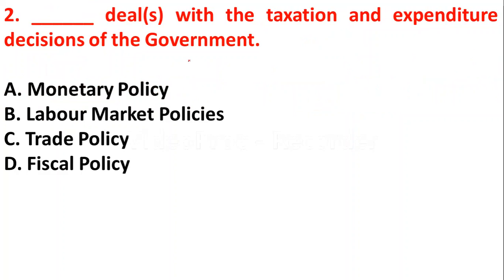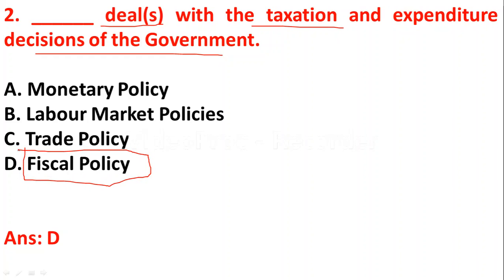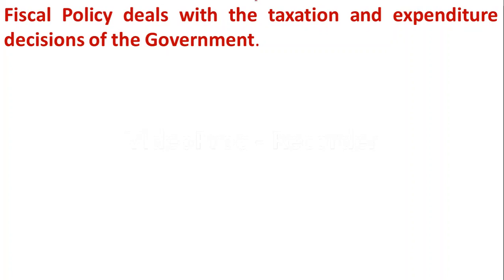The second question: which policy deals with the taxation and expenditure decisions of the government? Option A: monetary policy, option B: labor market policies, option C: trade policy, option D: fiscal policy. Fiscal policy deals with government revenue, government expenditure, and government debt. So fiscal policy is the correct answer.